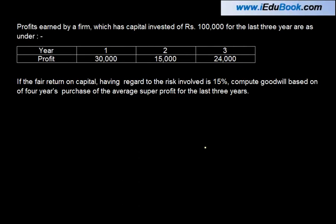Profits earned by a firm which has a capital invested of Rs. 1,00,000 for 3 years are as under: Year 1, 2, 3 — profits 30,000, 15,000 and 24,000. If the fair return on capital having regard to the risk involved is 15%, compute goodwill based on 4 years purchase of the average super profit for the last 3 years.